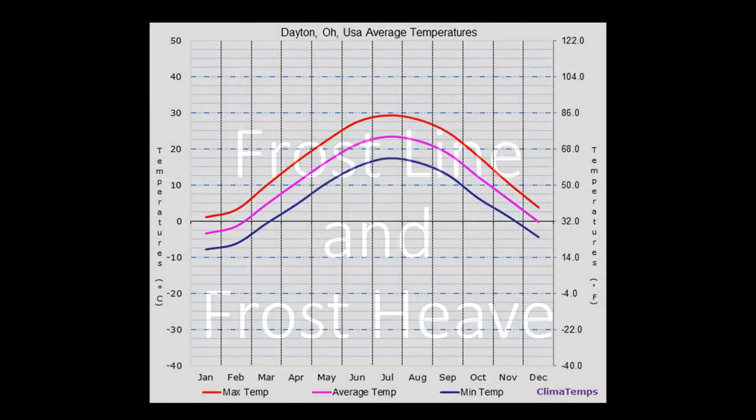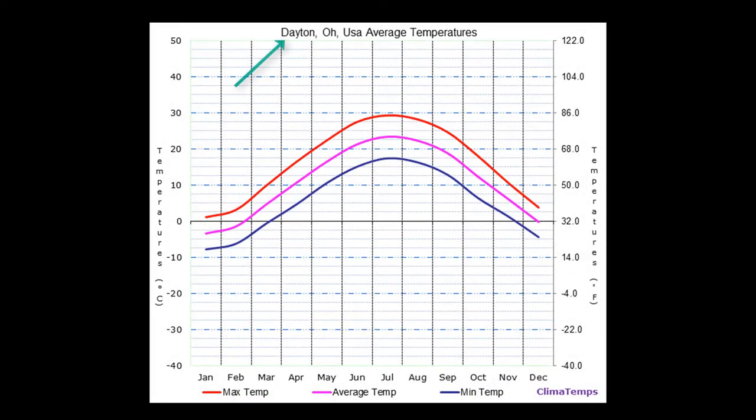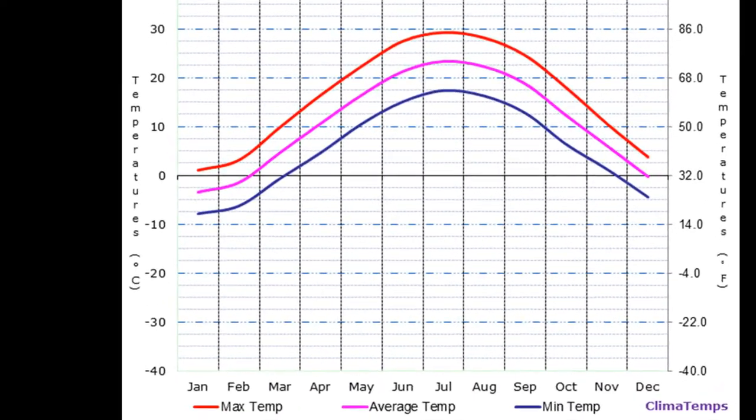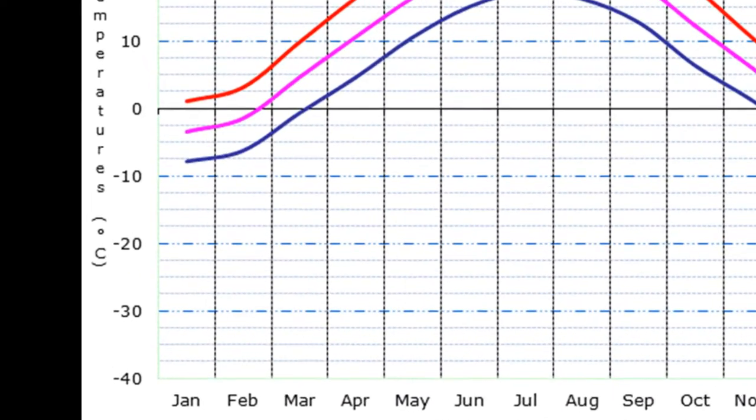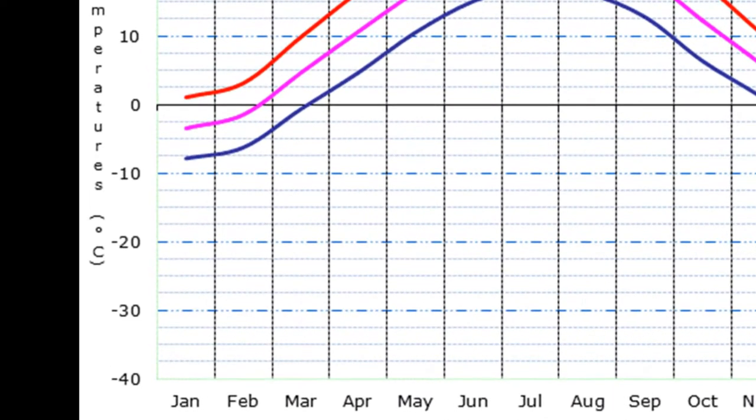Hello, I would like to explain the idea of a frost line. In Dayton, Ohio, in the wintertime, the temperatures drop as shown on the chart.